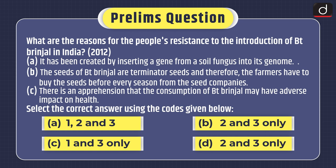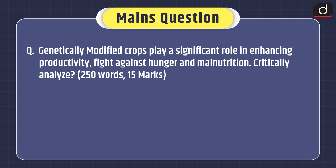Select the correct answer using the codes given below: (a) 1, 2, and 3; (b) 2 and 3 only; (c) 1 and 3 only; or (d) 2 and 3 only. And now the mains question: Genetically modified crops play a significant role in enhancing productivity, fight against hunger and malnutrition — critically analyze.